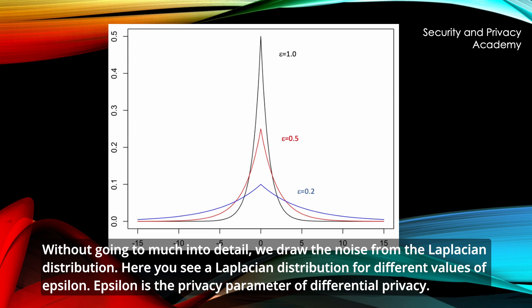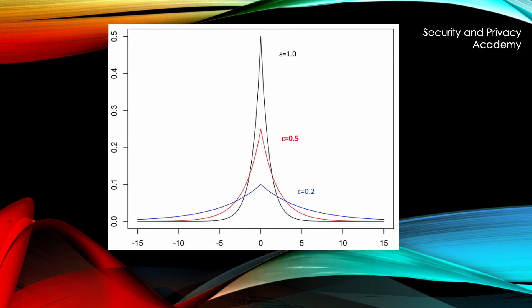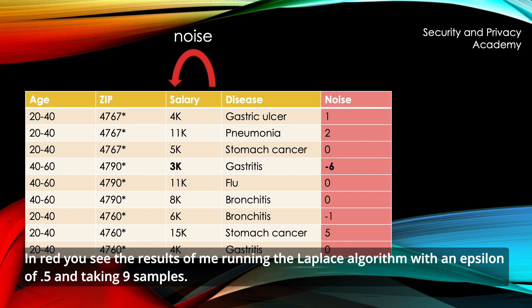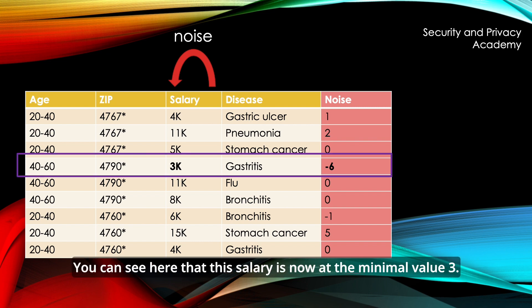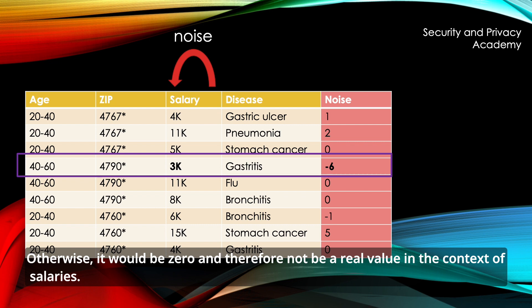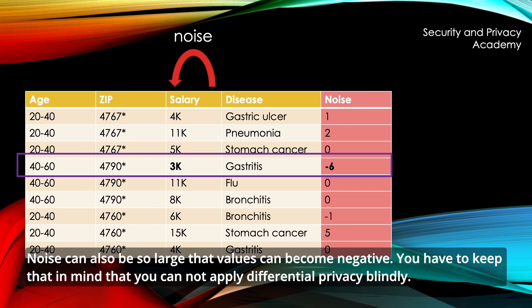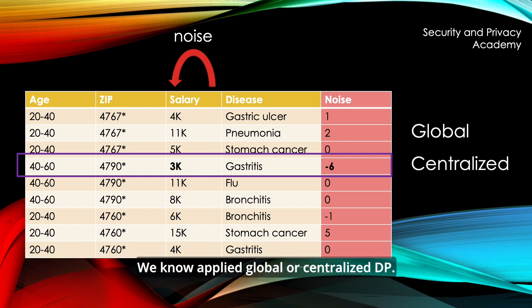Here you see a Laplacian distribution for different values of epsilon. Epsilon is the privacy parameter of differential privacy. In red, you see the results of running the Laplace algorithm with an epsilon of 0.5 and taking 9 samples. I then simply add the salary and the noise values. You can see that one salary is now at the minimal value of 3 — otherwise it would be 0, which is not a real value in the context of salaries. Note that noise can also be so large that values become negative, so you must keep in mind that you cannot apply differential privacy blindly.